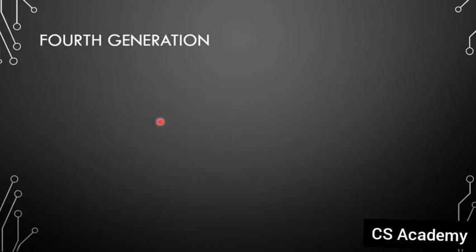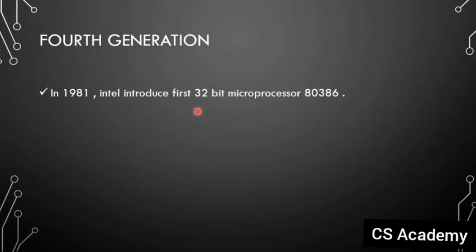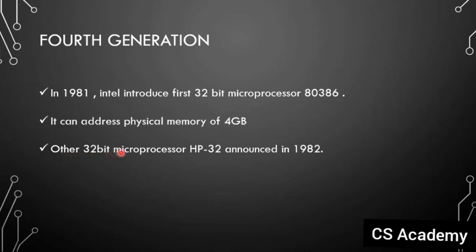The fourth generation: in 1981, Intel introduced the first 32-bit microprocessor, the 80386. So from 4-bit in the first generation, 16-bit in the third generation, we now have 32-bit in the fourth generation. It can address physical memory of up to 4 GB. Other 32-bit microprocessors include the HP 32, announced in 1982.